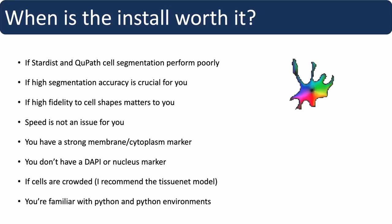Also use it if speed is not an issue — CellPose was never designed to be an efficient workflow. At least in QPath there's a lot of reading and writing, and you can't easily run it on whole slide images. Another advantage: if you have a strong membrane and cytoplasm marker but no DAPI or nucleus marker, CellPose can actually segment cells without a nucleus marker — just looking at the membrane. And finally, if you're familiar with Python environments, the setup isn't scary at all.